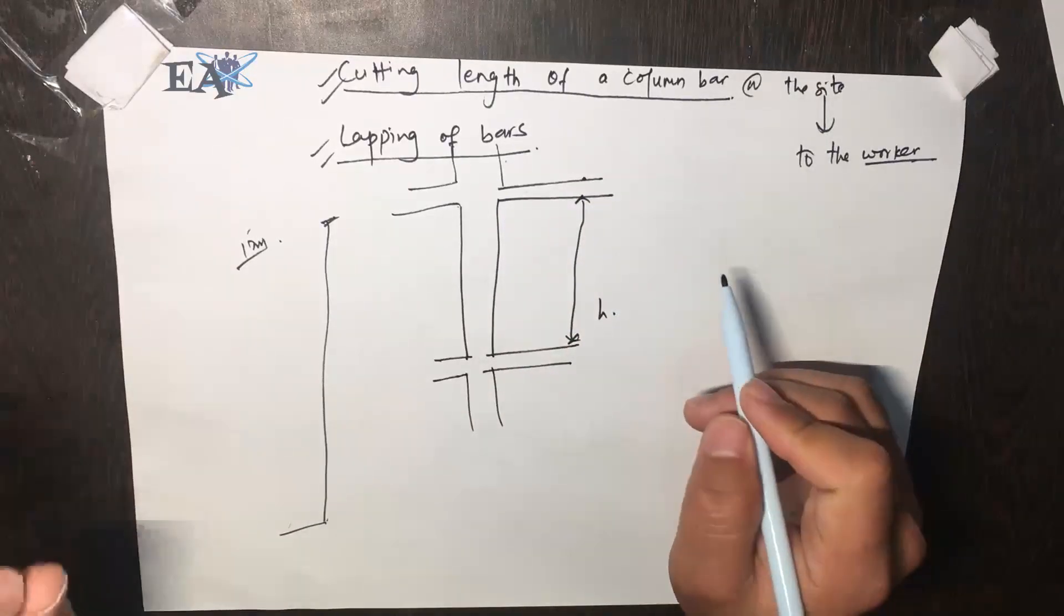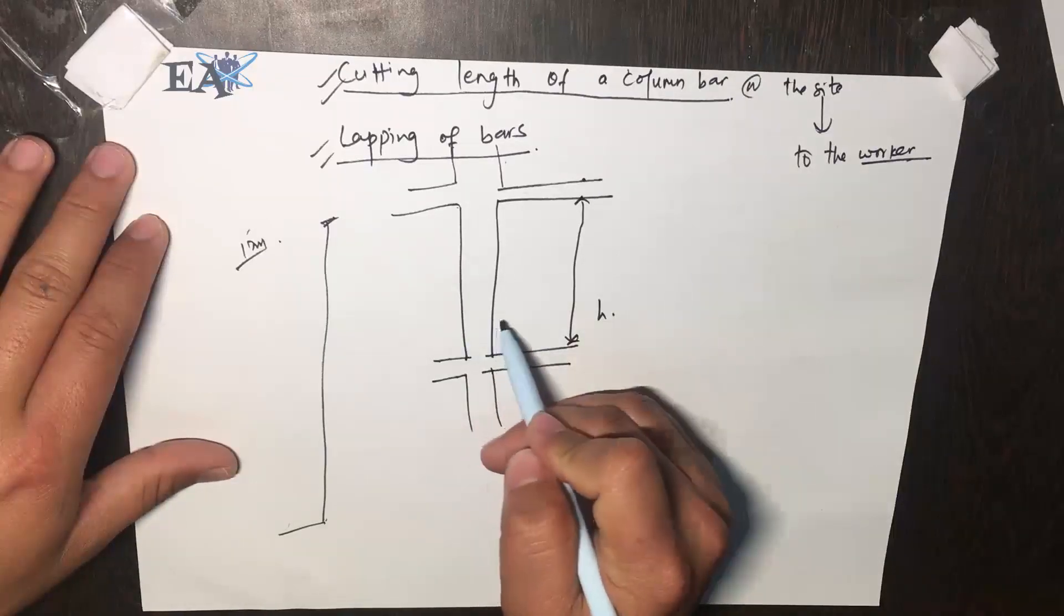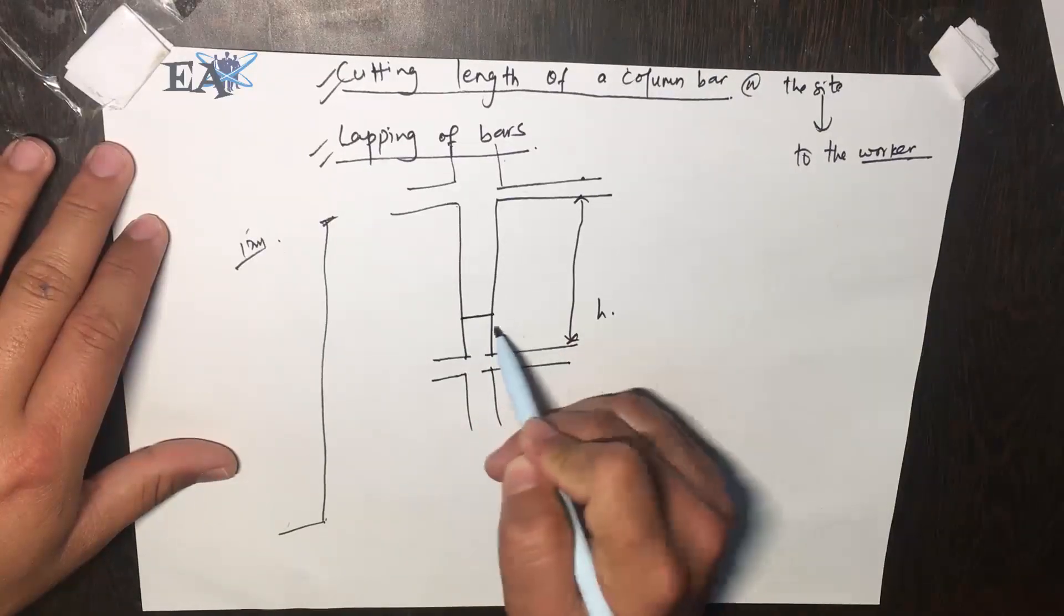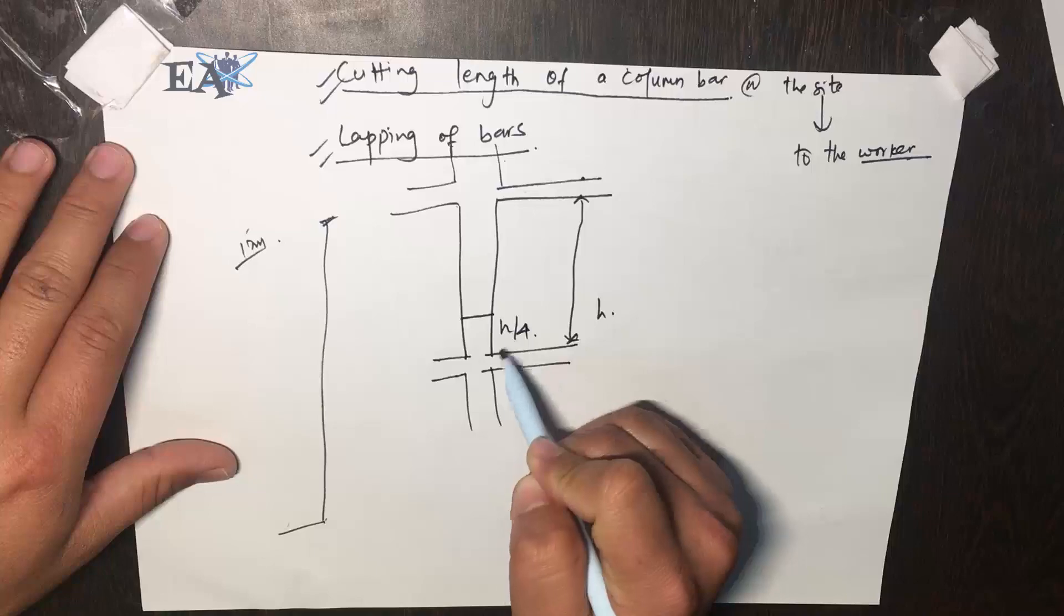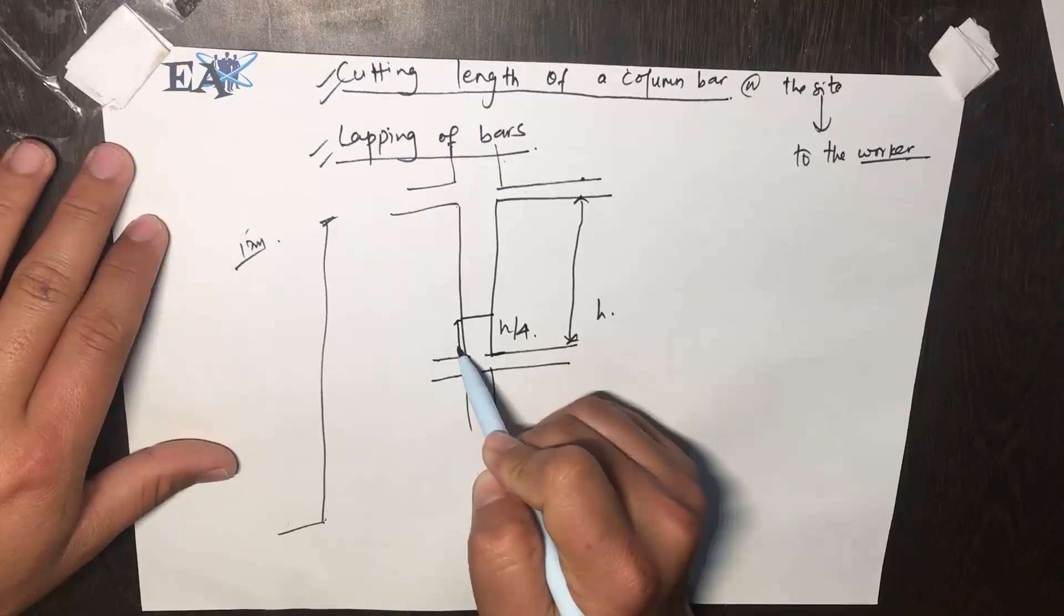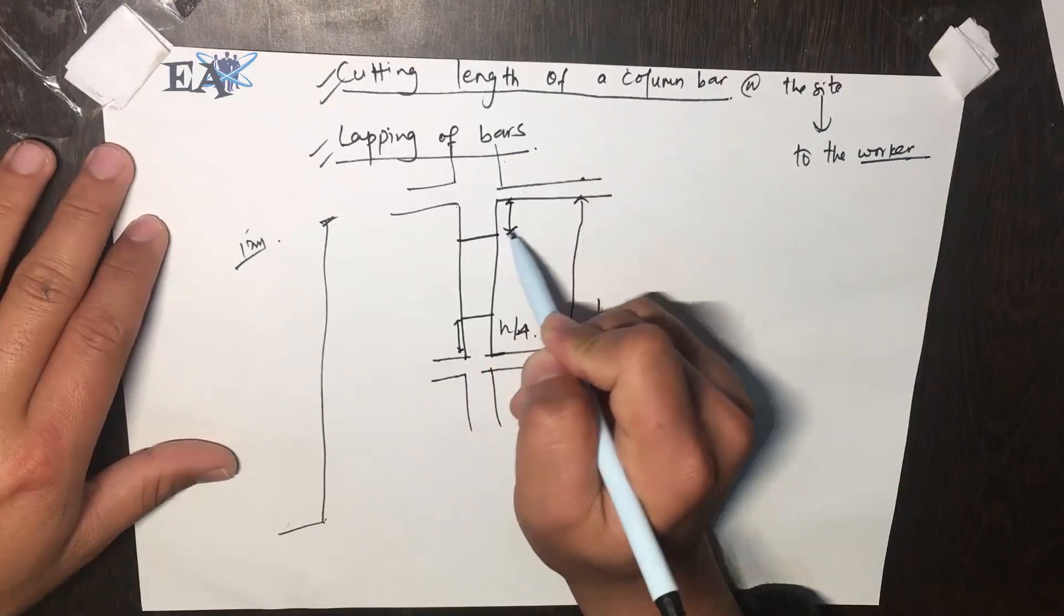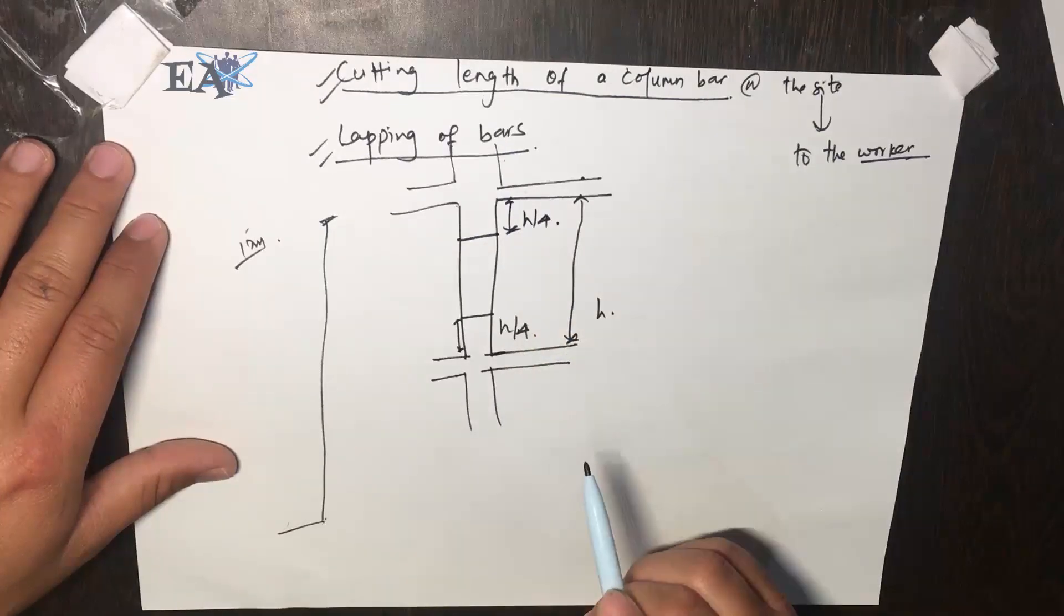Now let us take a segment that is at h by 4 from this point. So this is h by 4, and again from here also h by 4.